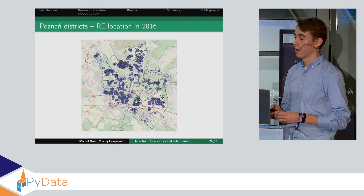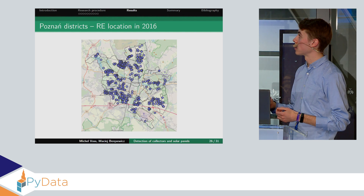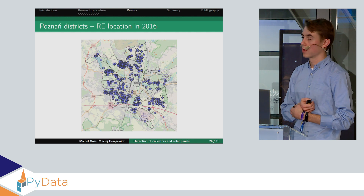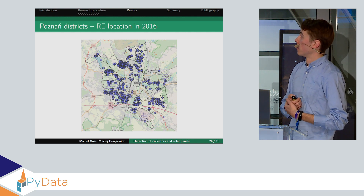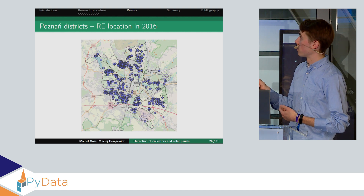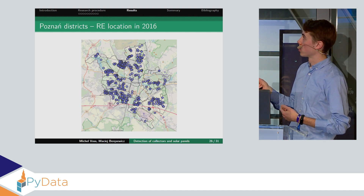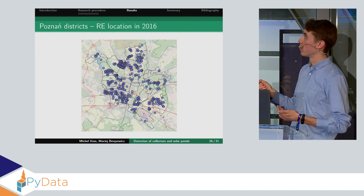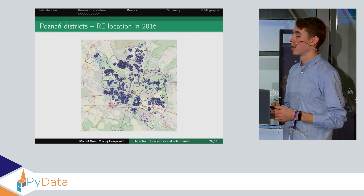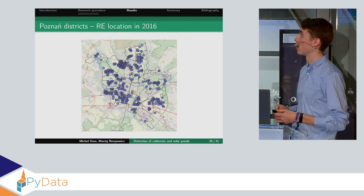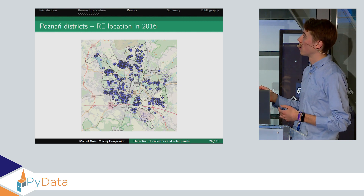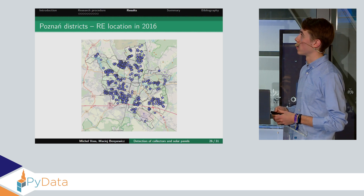We took the model, ran it over all the images, and predicted. Here's a map of Poznan with all the solar systems. As you can see, there are districts without panels — here are some large residential blocks. It makes sense that in the center of Poznan there are no solar panels, because the roofs there have no space for panels. But in the suburbs, in most cases, there are the most panels.